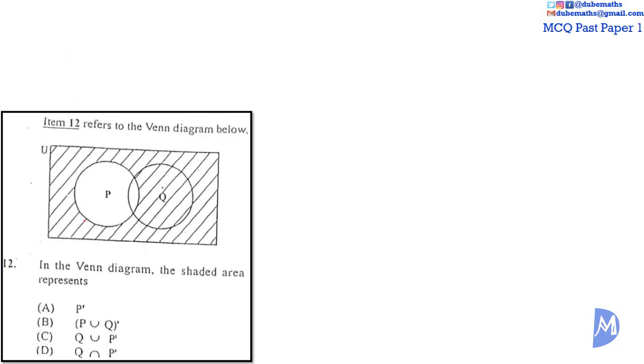Question 12. The shaded area is everything outside of P. Stated another way, everything but P. This is, by definition, P complement. The answer is A.